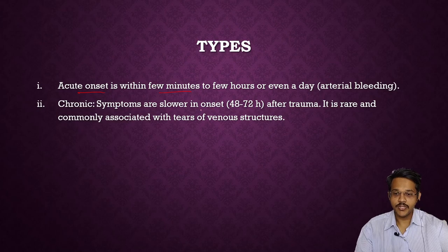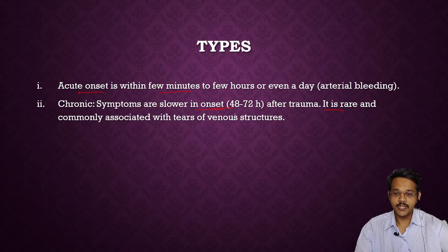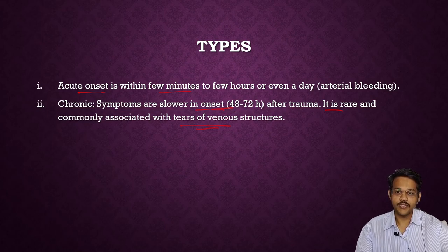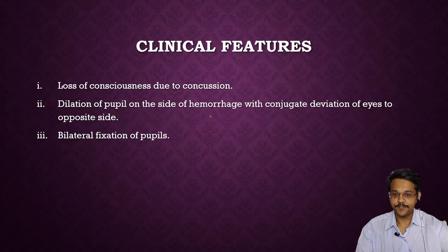Types based on onset: acute onset occurs within few minutes to a few hours or within a day, mainly due to arterial bleeding. If venous, it mainly leads to chronic bleeding. Symptoms are slower in onset — 48 to 72 hours in chronic epidural hemorrhage, which is rare and commonly associated with tears of venous structures.